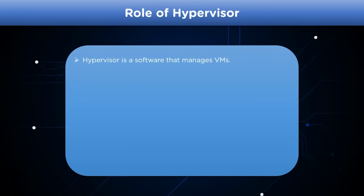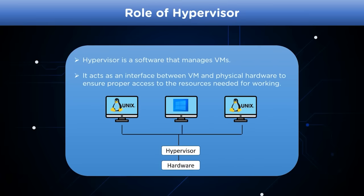A hypervisor is a software layer that manages virtual machines. It forms an interface between the physical system and the virtual machine, ensuring proper access to resources. It also manages virtual machines so that they don't interfere with each other's resources.